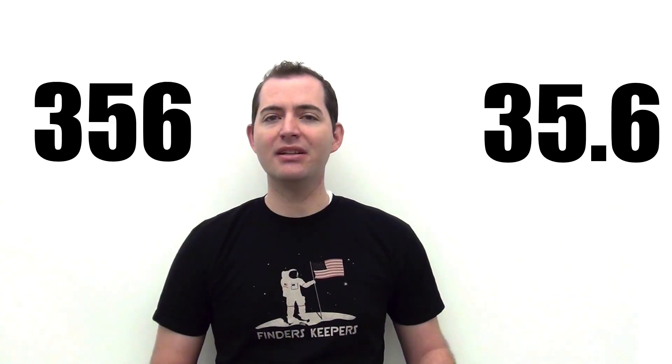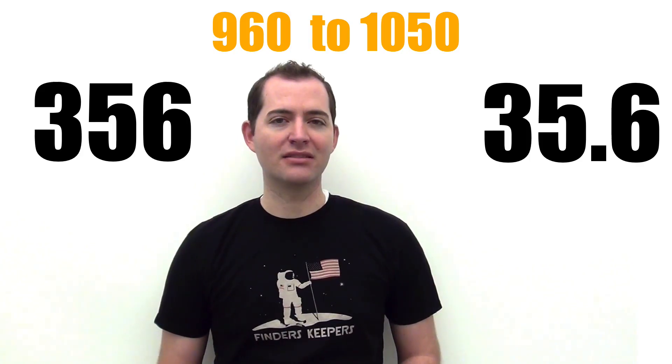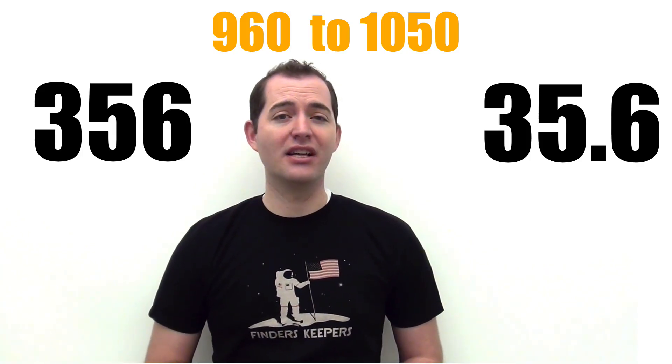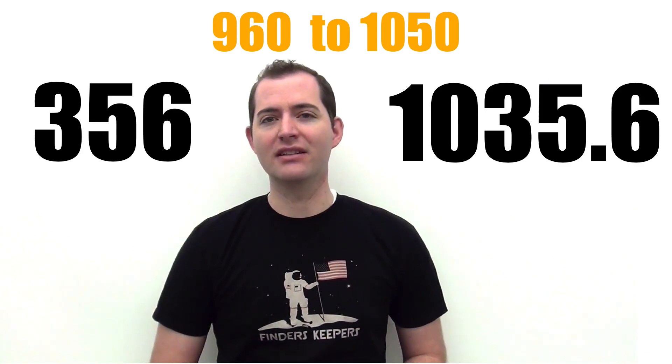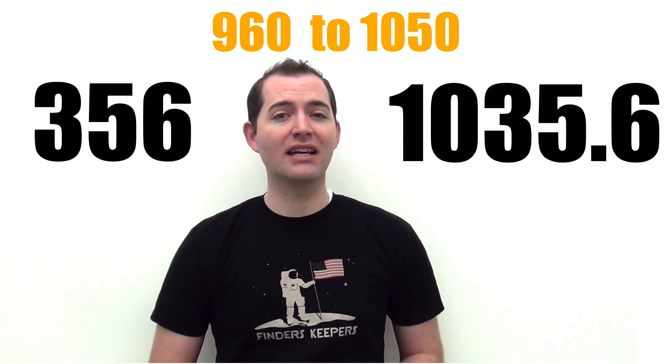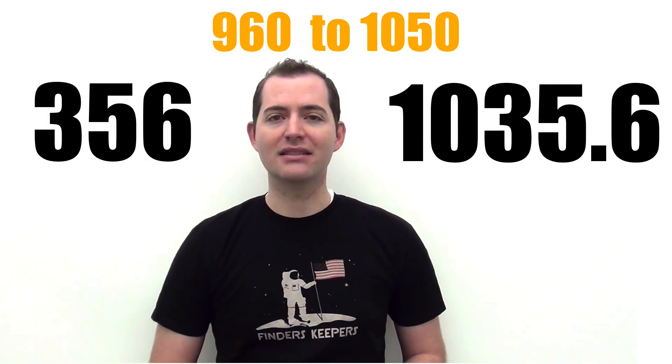This can easily be accomplished by remembering that air pressure typically ranges from 960 millibars to 1050 millibars. So in this situation, it makes more sense to add a 10 to the front of this pressure, which gives us an air pressure of 1035.6 millibars.